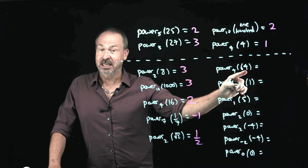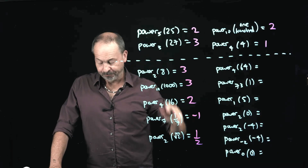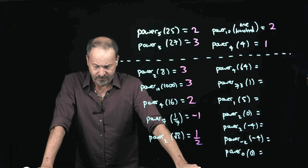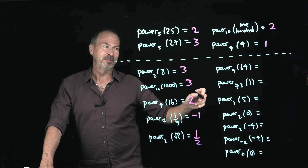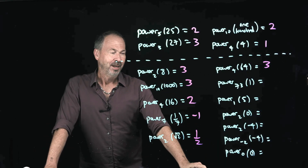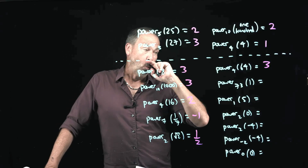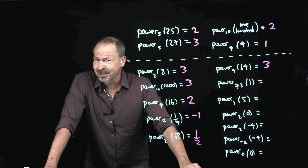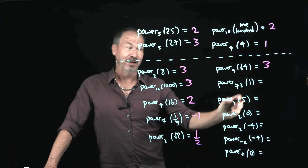The power of 4 that gives the answer 64 — I don't have that one in my head. 4 times 4 is 16, times another 4 is 64. So 4 cubed, 4 to the power of 3, gives 64. The power of 73 that gives the answer 1 — anything to the 0 gives 1, so 73 to the 0 gives 1. The power of 73 that gives the answer 1 is 0.